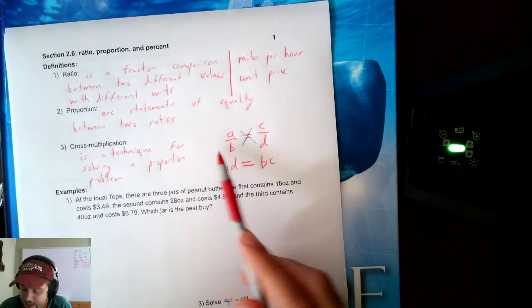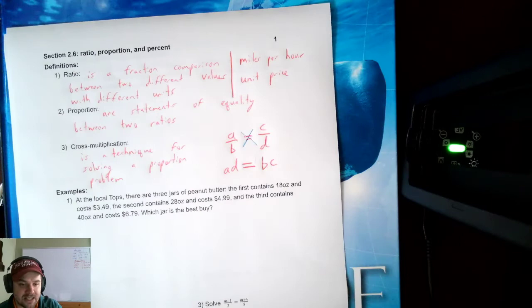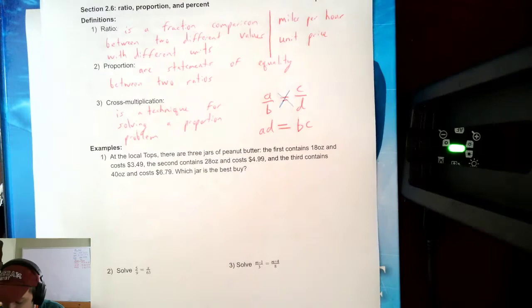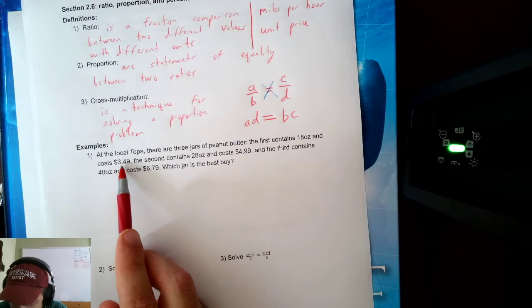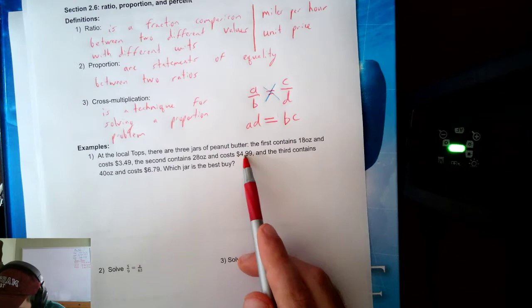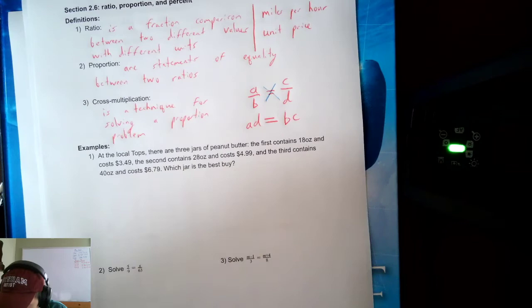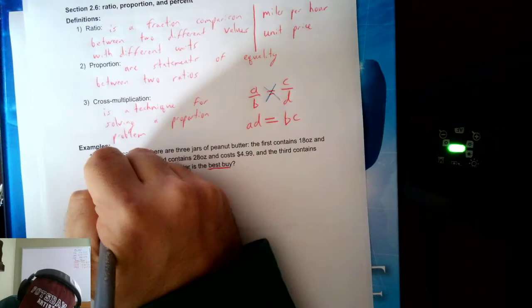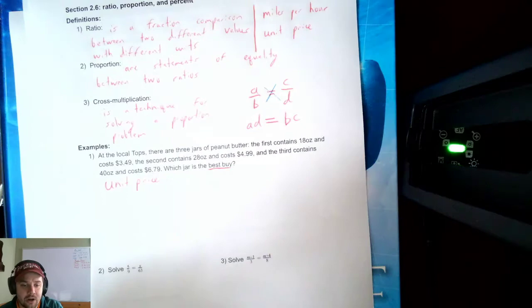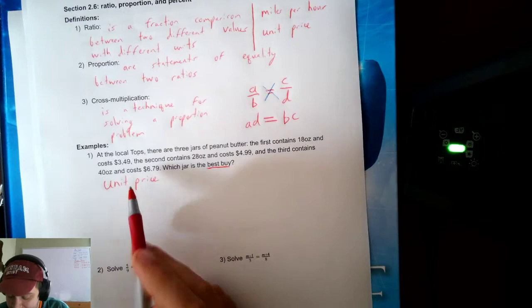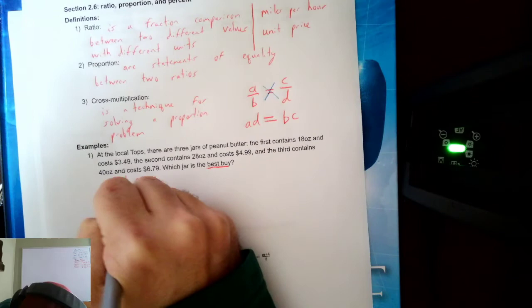Before we get to proportion problems, let's look at some example ratios. At the local Tops, there are three jars of peanut butter. The first contains 18 ounces and costs $3.49. The second contains 28 ounces and costs $4.99. The third contains 40 ounces and costs $6.79. Which jar is the best buy? To find the best buy, I need to think about the unit price — which jar gives me the best ratio of dollars to size. Unit price is always dollars over size.